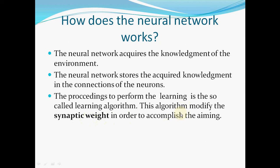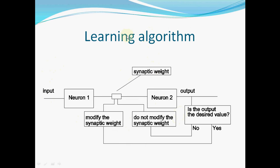We can see how the learning algorithm works. The input of the first neuron is shown here. This first neuron furnishes the output, which passes through neuron 2 via the synaptic weight. We can see the output of neuron 2. The output of neuron 2 is compared to the desired value. If the output equals the desired value, there is no necessity to modify the synaptic weight. If the output is different from the desired value, it is necessary to modify the synaptic weight.